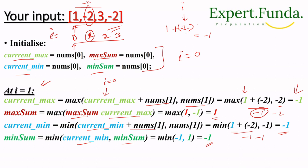To find current_max at i=1: current_max is 1, current value is -2, so max(1 + (-2), -2) = max(-1, -2) = -1. So current_max updates to -1. Previously max_sum was 1, and current_max is -1, so max_sum stays at 1. You can similarly find current_min and current_max for each step.